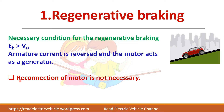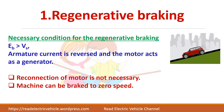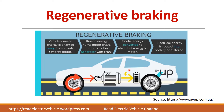In regenerative braking, reconnection of the motor is not necessary. If you make the motor act as a generator, regenerative braking can take place and the machine can be braked to zero speed. As an example of regenerative braking in electric cars, the vehicle's kinetic energy from the wheels goes to the motor shaft, which now acts as a generator. The generator gives electrical output which is stored in the battery. Under normal conditions, this battery supplies the motor and the motor delivers energy to the wheels.